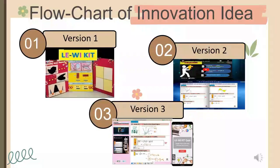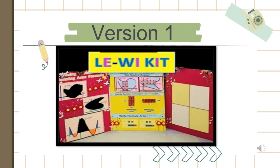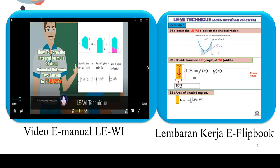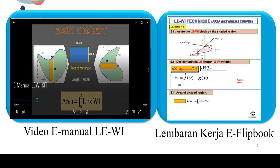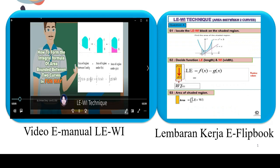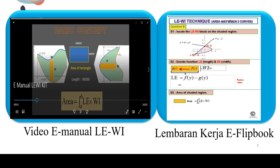This innovation has undergone three improved versions to enhance its flexibility and maximize its effectiveness when delivered to students. Version 1 is a model version constructed using two pieces of polystyrene, fabric, softboard, and Luwi blocks, specifically designed for lecturers conducting tutorial classes and providing a clear visual aid to assist students in forming integral formulas for the area between curves. In early 2020, this innovation was upgraded to Version 2 with the integration of technology. The Length Times Width Technique was transformed into a video format, accompanied by worksheets presented as eFlipbooks and eManuals created using the AnyFlip application. This adaptation allowed the technique to be easily shared with students during online learning sessions, particularly in response to the COVID-19 pandemic, through a dedicated YouTube channel.